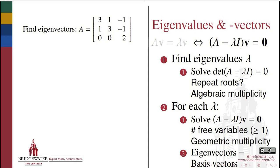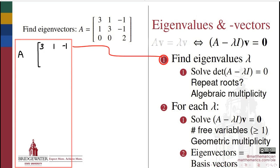Because we need this equation to have a non-trivial solution for V, we require that A minus λ times the identity be a non-invertible, in other words singular, matrix. Requiring singularity gives us the process for finding the eigenvalues of the matrix, and we therefore require its determinant to be equal to zero, giving us the characteristic equation for A.